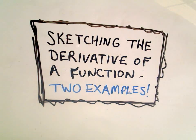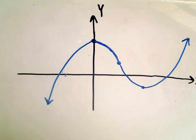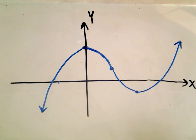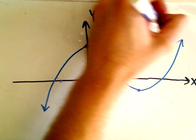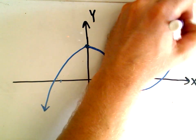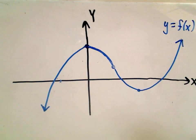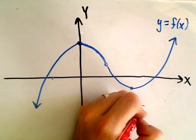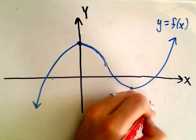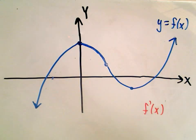In this video, I'm going to talk about sketching the derivative of a function when you're given the original function. I'm going to do two examples here. Here's my first example. The function in blue is going to be our original function, y equals f of x. And what I'm going to try to do here is sketch them on the same graph. My derivative, f prime of x, I'm going to do this one in red.